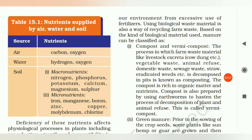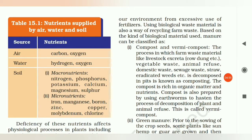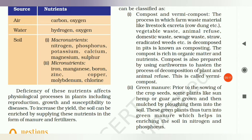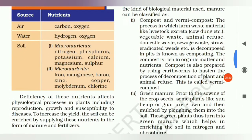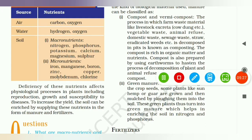Using biological waste material is also a way of recycling waste. Based on the kind of biological material used, manure can be classified. We use organic waste to recycle it and get good products. Manure is divided into types — first, compost and vermicompost, and second, green manure.